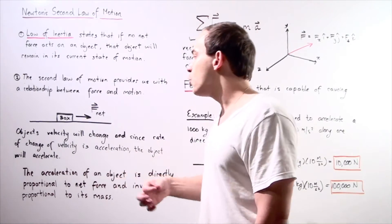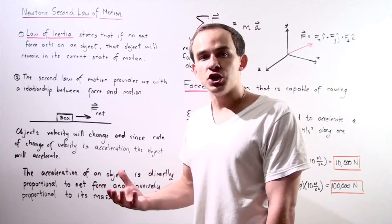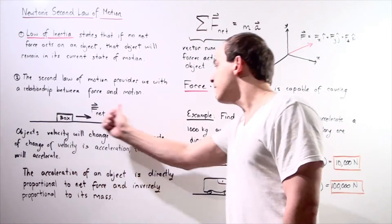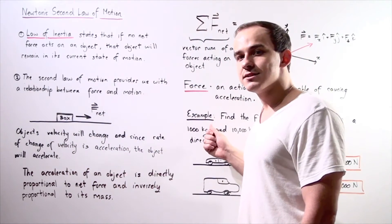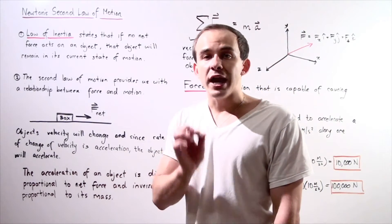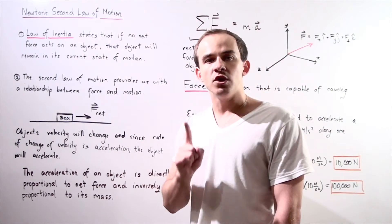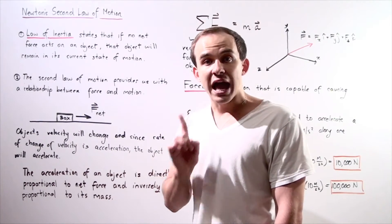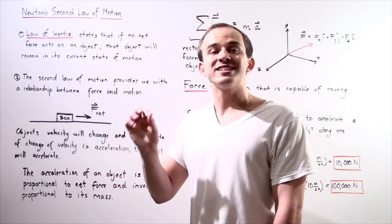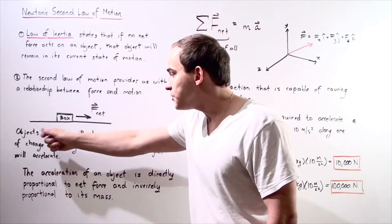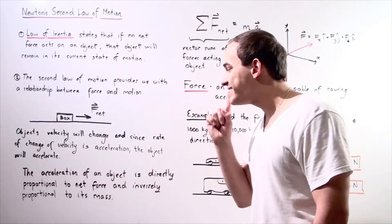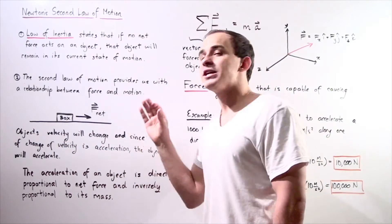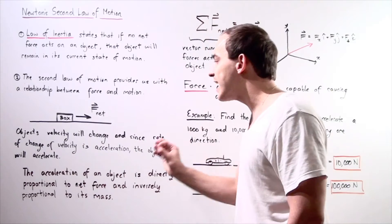It will begin to experience motion. Its velocity will begin to increase in this direction along the x-axis. Recall that the rate of change of velocity with respect to time is acceleration. And so that means this object will begin to accelerate. The object's velocity will change, and since the rate of change of velocity is acceleration, the object is said to be accelerating.